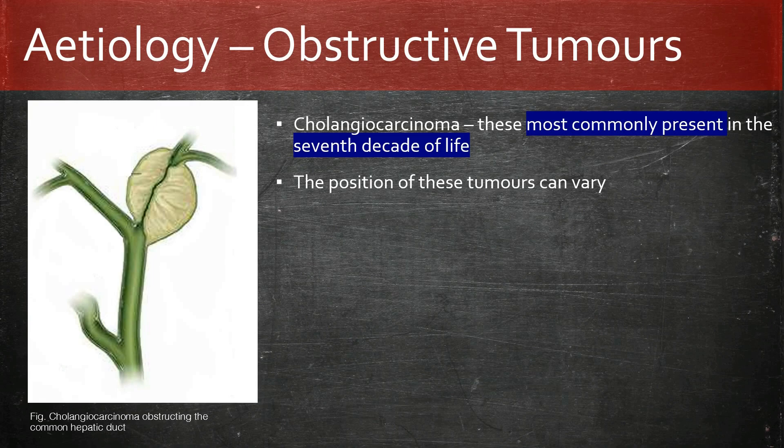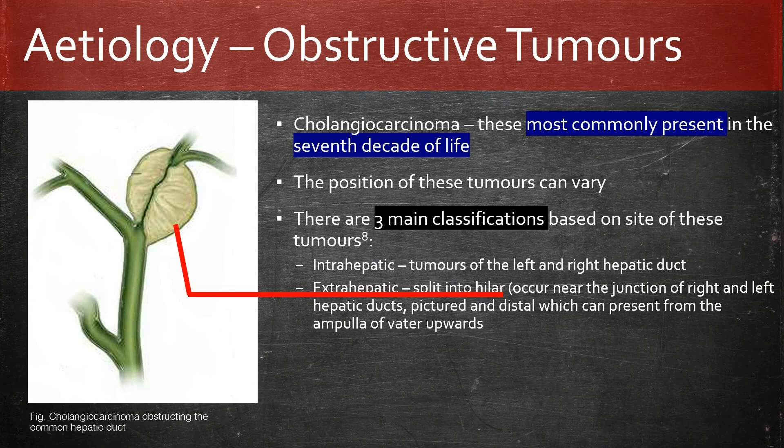Extra-hepatic cholangiocarcinoma presents with symptoms of cholestasis such as dark urine, jaundice, and itching, along with a painless enlarged gallbladder called Courvoisier's Law, which is discussed ahead. This is in contrast to intra-hepatic presentations, which rarely present with signs of cholestasis due to the location of the tumour.